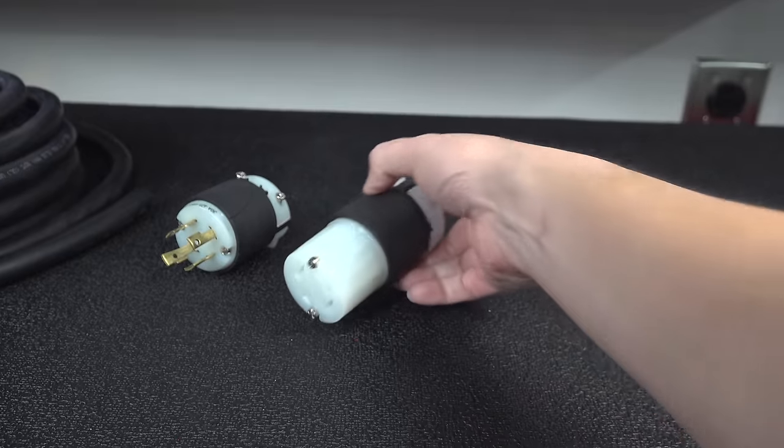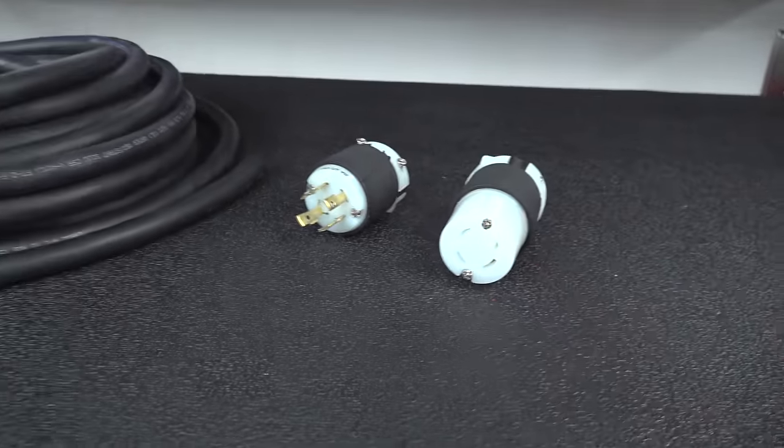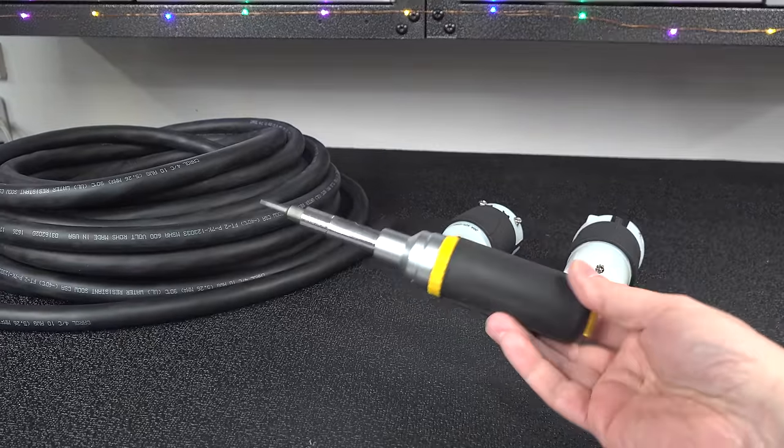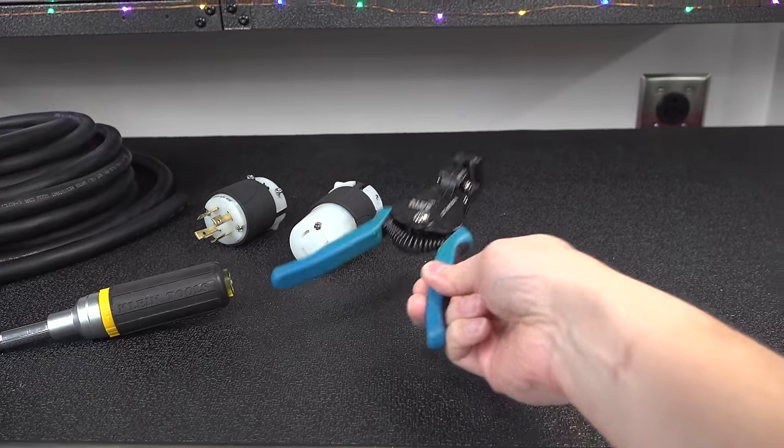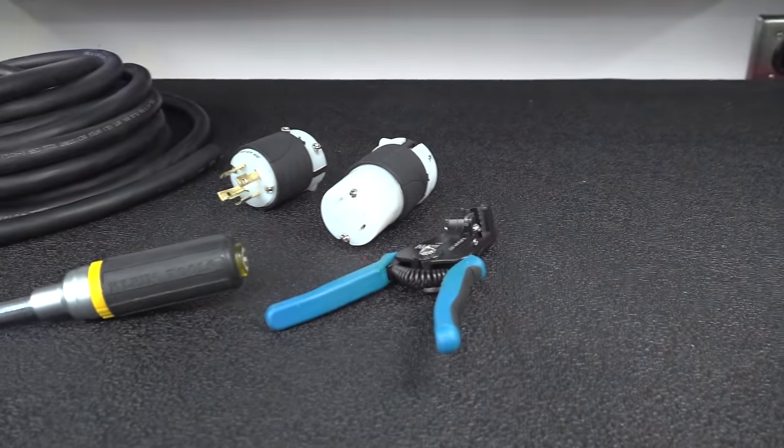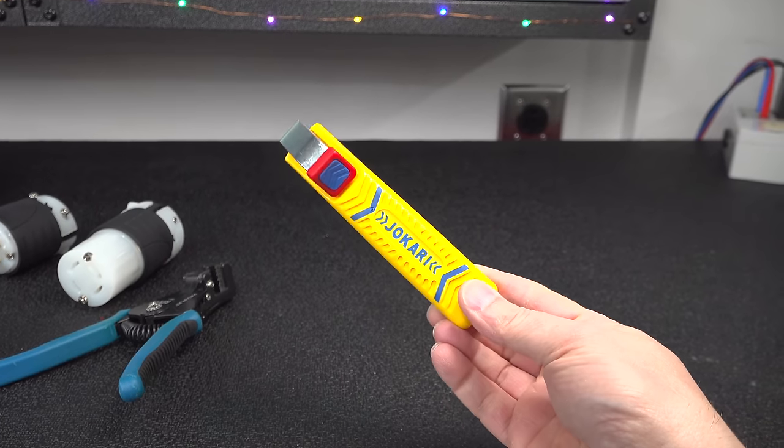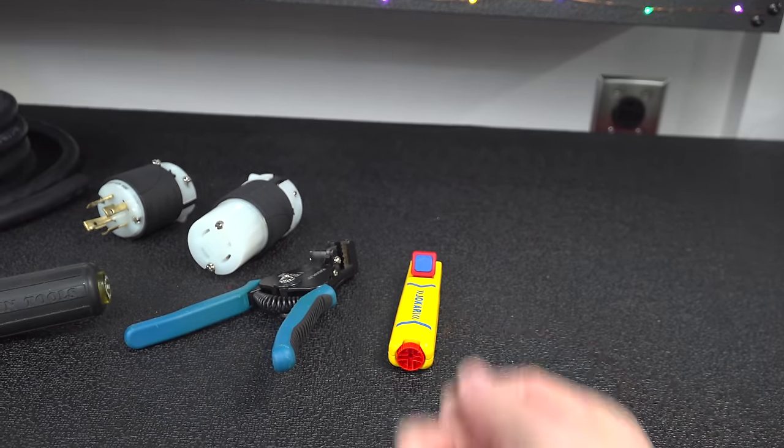For every generator cable, you're going to need two plugs, one male and one female. You're also going to need some regular tools like a screwdriver, some wire strippers, and I am going to use this special cutter that's going to make removing the insulation on that heavy cable a lot easier.